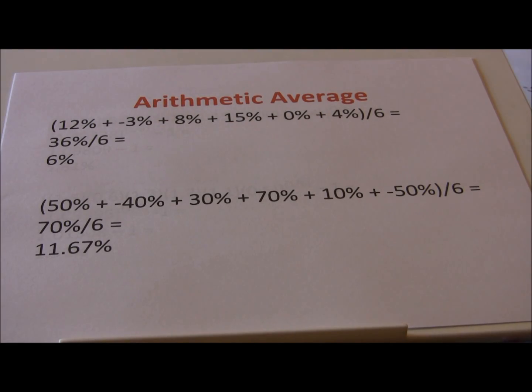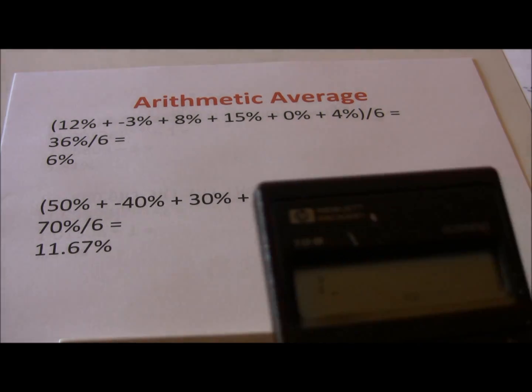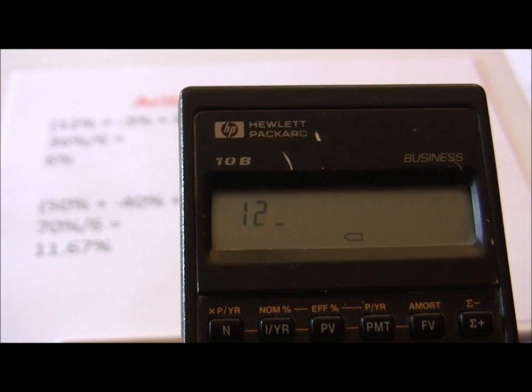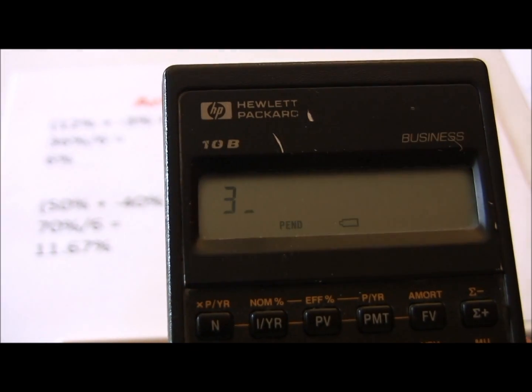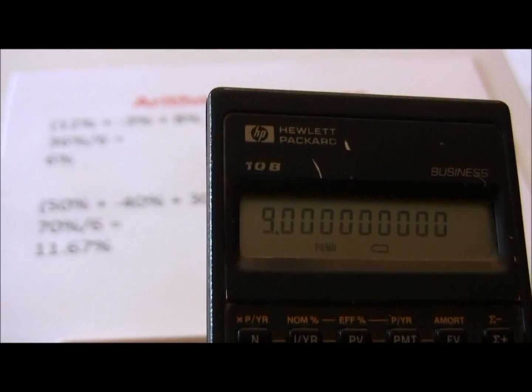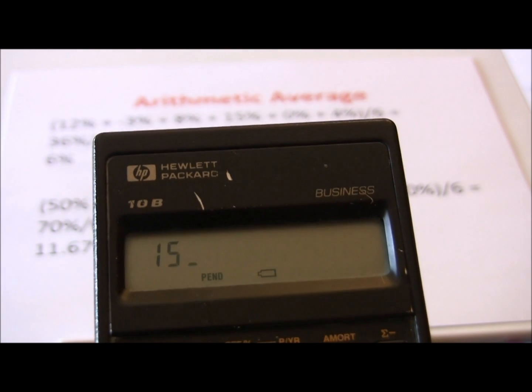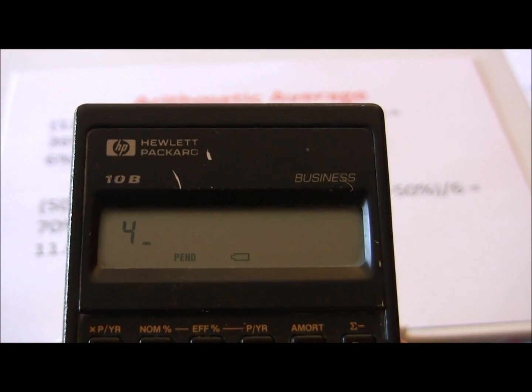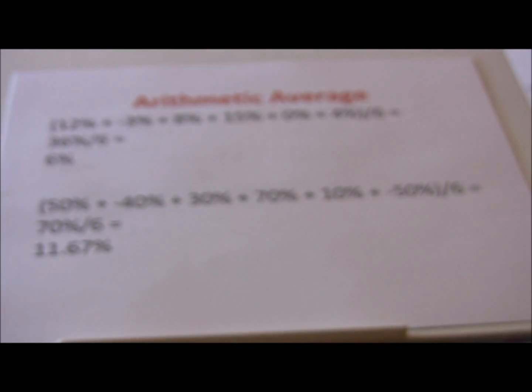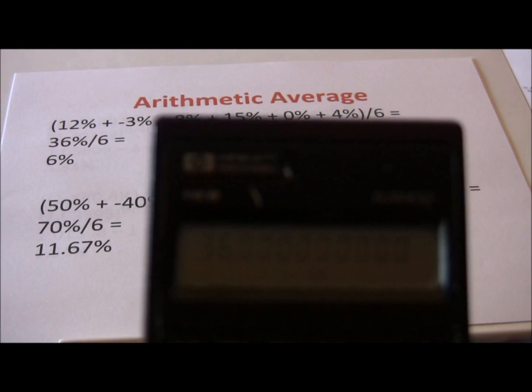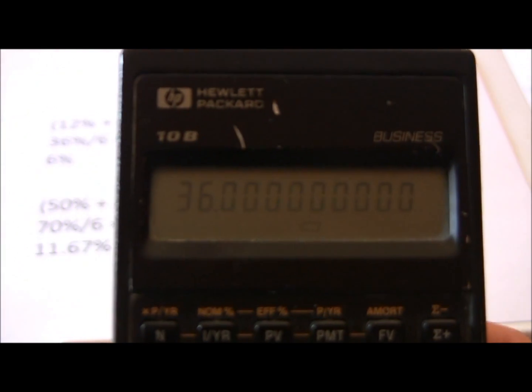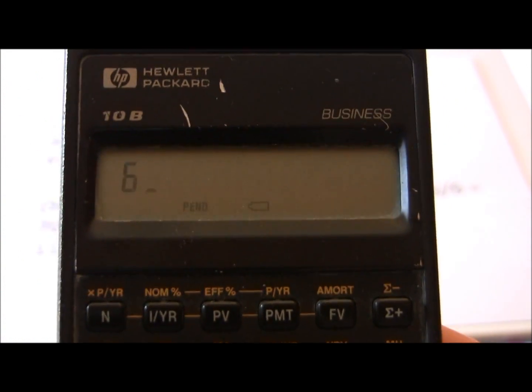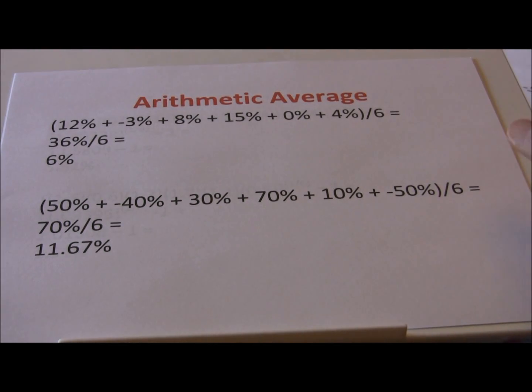For the arithmetic average, it's simply adding up the returns and dividing by the number of periods. So if we look, we have a 12% return in year one, lose 3% in year two, so we subtract that off, add in our 8% in year three, add in our 15% in year four, add in 0% in year five, and 4% in year six. It gives us a total return of 36%. We divide that by our number of periods, which is six. That gives us a 6% arithmetic average return.